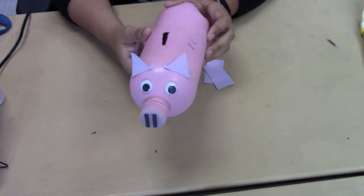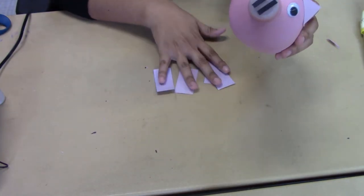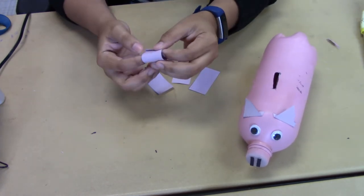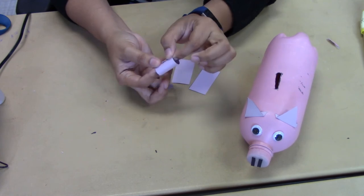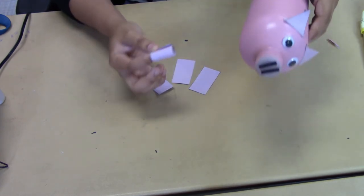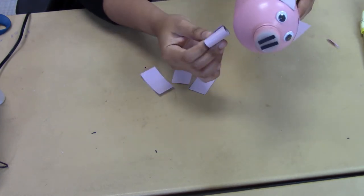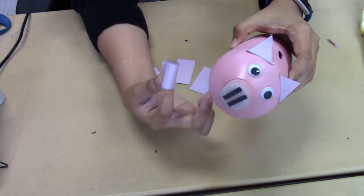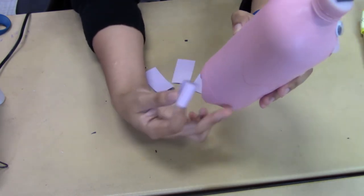And so the last step is to do the legs. So we want to, like I showed you earlier, roll it up, glue that off, and then glue the top to the bottle so that it will stand. So you want two on one side and two on the other.